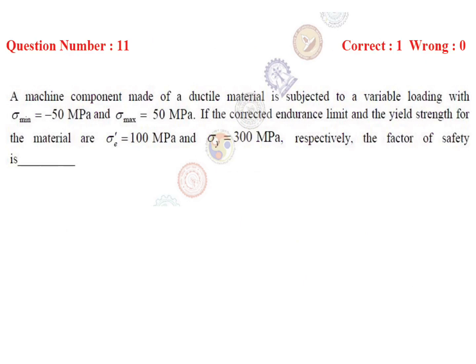The question is: a machine component made of a ductile material is subjected to variable loading, with sigma minimum equal to -50 MPa and sigma maximum equal to 50 MPa. If the corrected endurance limit and the yield strength for the material are sigma E dash equal to 100 MPa and sigma Y equal to 300 MPa respectively, the factor of safety is how much?